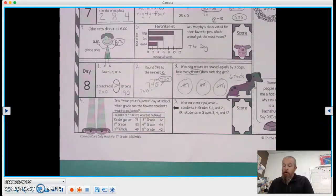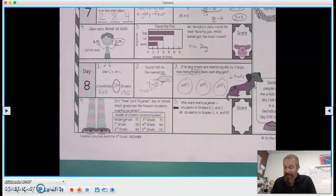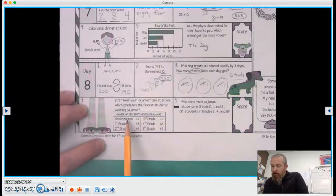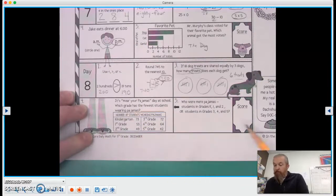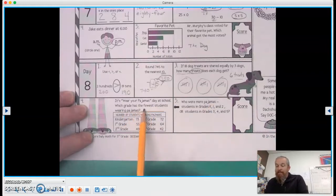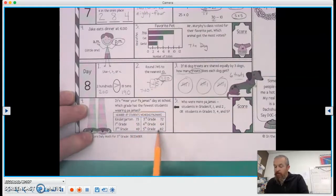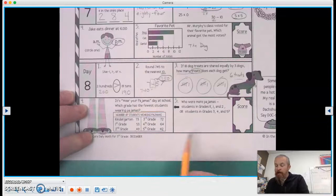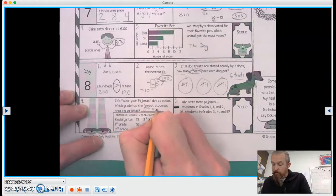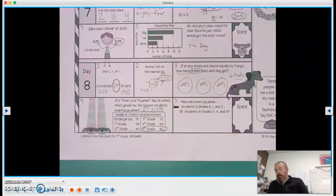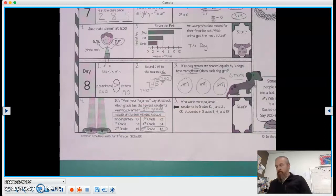Okay, number four, it's wear your pajamas day at school. I can't wait for that day. Wait till you see the jammies, right? Which grade has the fewest students wearing pajamas? So number of students wearing pajamas. So kindergarten, first, second, third, fourth, and fifth grade, 73, 53, 49, 72, 64, 42. We want to know which grade has the fewest students. Well, the smallest number out of all of these, I see two in the 40s, 42 is a little bit less than 49, fifth grade. Oh, that's a bummer, fifth grade's usually fun. Come on, fifth graders.